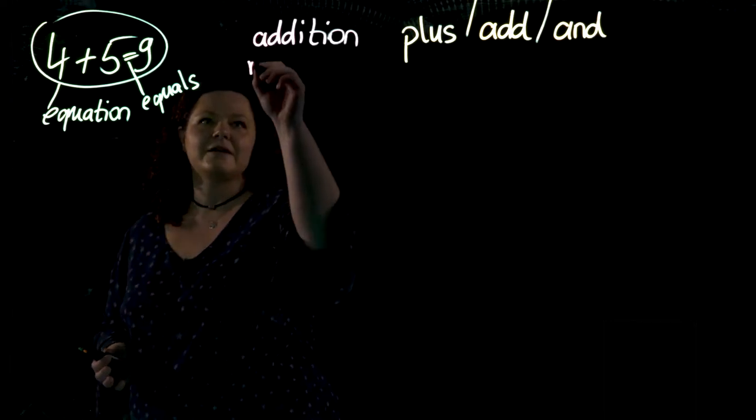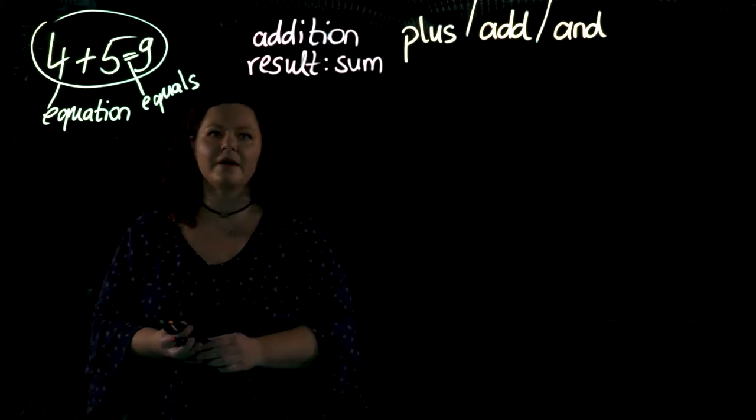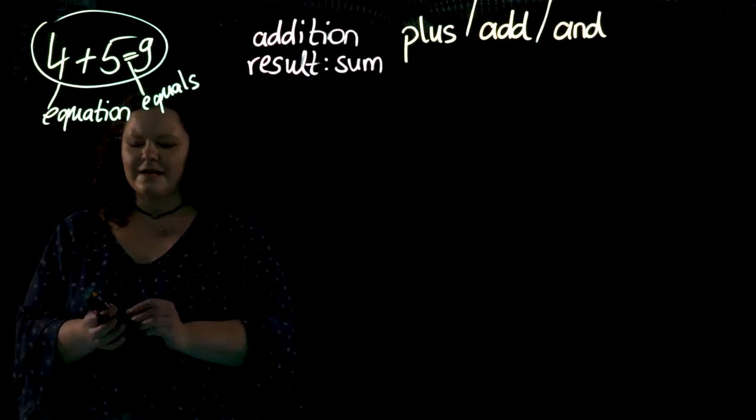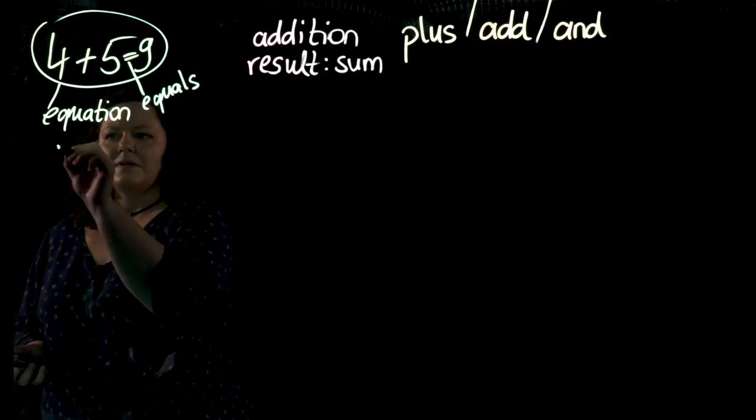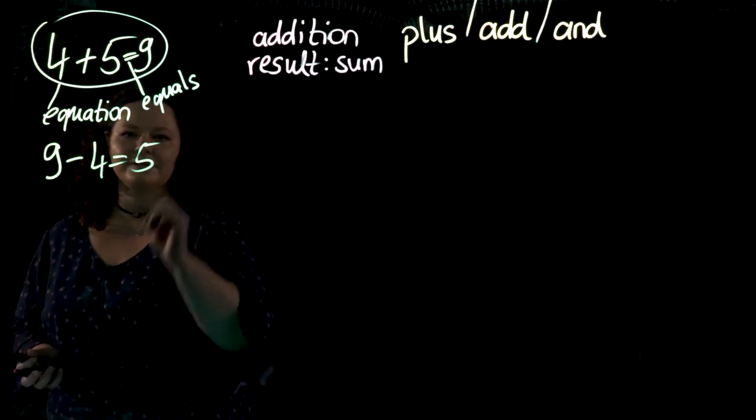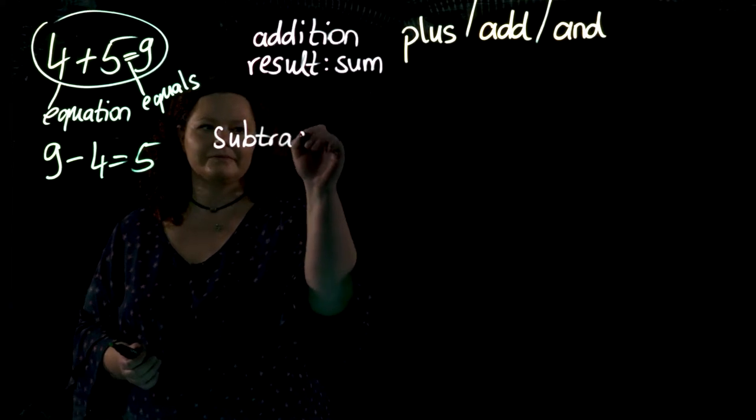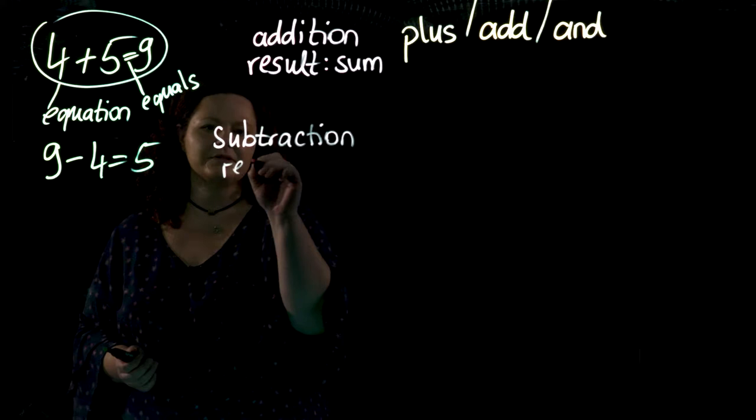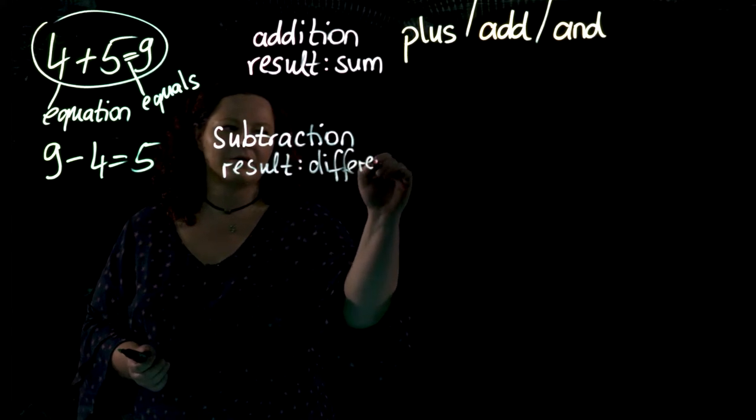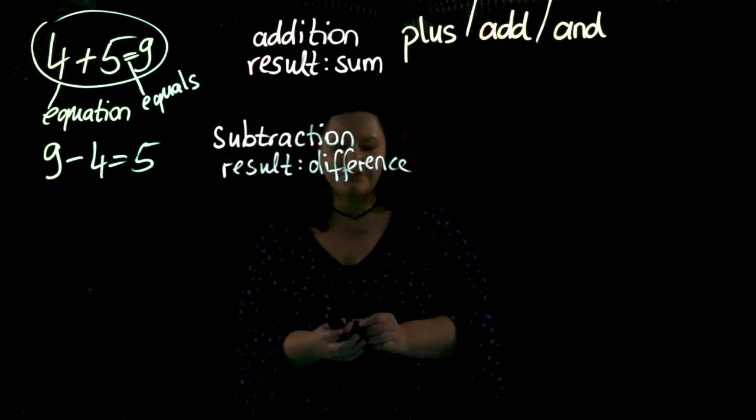Speaking of the result, the result of this is called a sum. This is the first equation and mathematical operation. The next operation is the opposite: nine minus four equals five. This is called a subtraction. The result of a subtraction is called a difference, and we can explain this in two different ways.